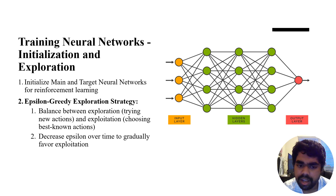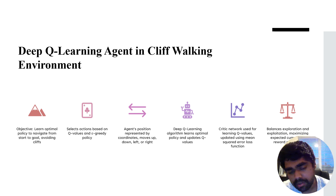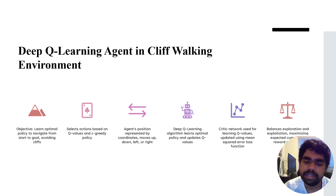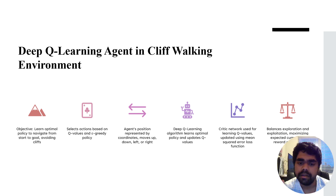We gradually decrease epsilon over time to gradually favor exploitation. For our specific cliff walking problem, the DQN learning algorithm's objective is to find an optimal policy to navigate from start to goal while avoiding the cliff. We select the action based on Q-values using the epsilon-greedy policy. The agent's position is represented by coordinates moving up, down, left, and right. After 2000 episodes, the Q-values became constant and the agent was able to successfully reach the goal.